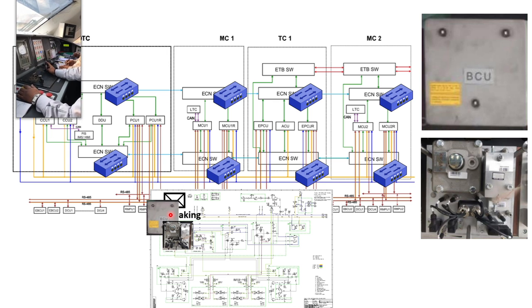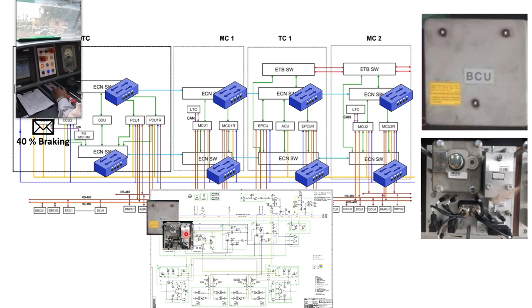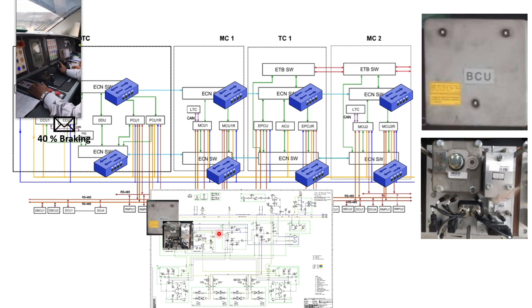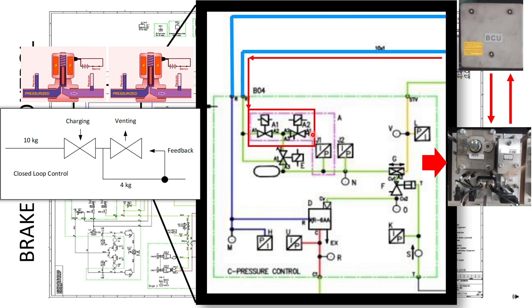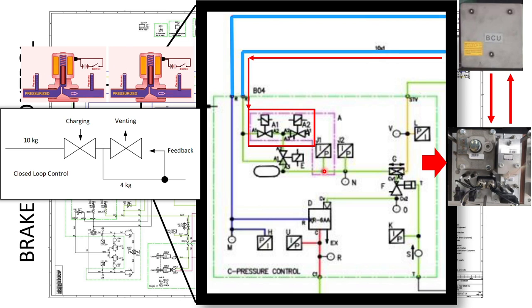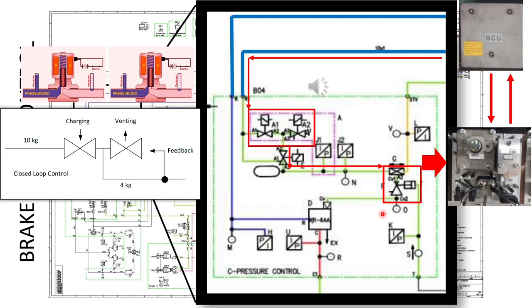The EP panel constantly interfaces with the BCU. The BCU receives the brake demand from the driver and controls the pneumatic panel so that the output pressure corresponds to the 40% braking demand. This pressurized air is fed into two valves: a charging valve that increases downstream pressure, and a venting valve that reduces downstream pressure. These two work together to achieve the desired downstream pressure. A transducer feeds back the downstream pressure to verify that the demanded pressure is achieved, making it a closed-loop system.